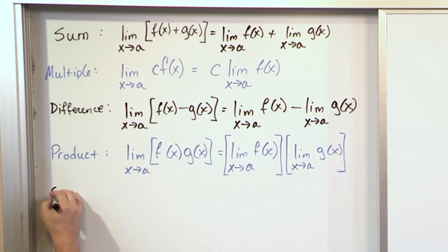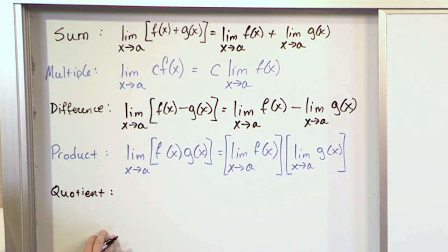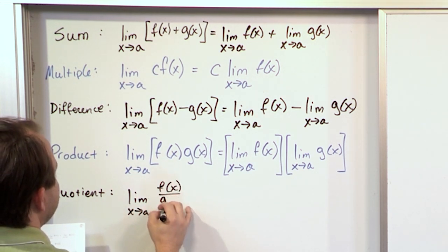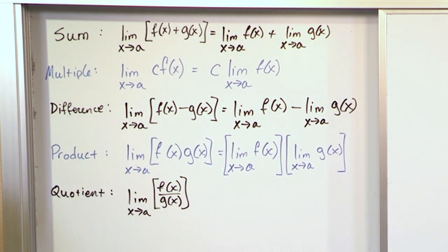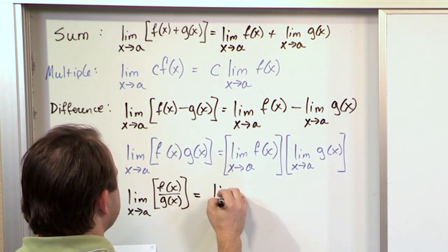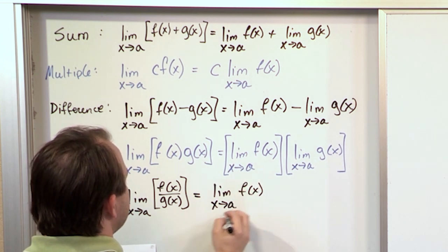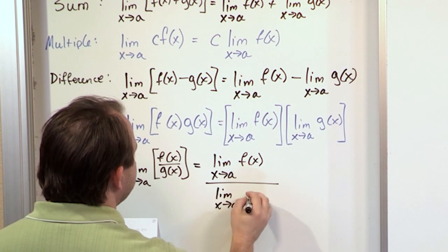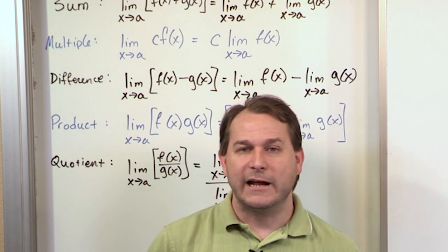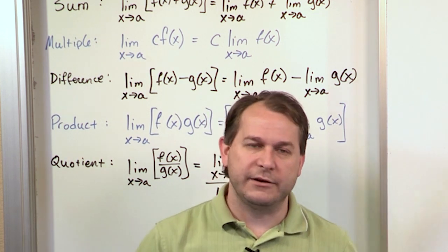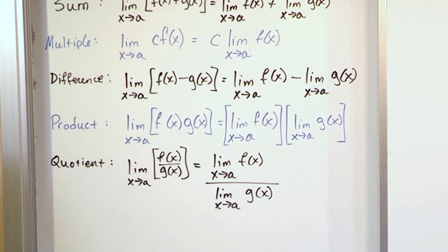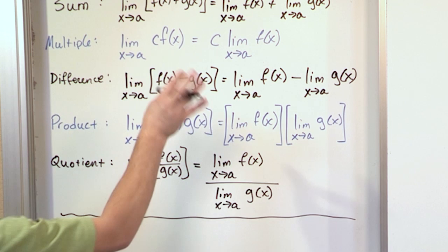And then the last one is called the quotient rule. If you have the limit as x approaches a of f of x divided by g of x — a function on top and a function on bottom — then what you basically do is you say the limit as x approaches a of f of x divided by the limit as x approaches a of g of x. Believe it or not, you've used that before too, because we've done lots of problems where you plug in the value on top and plug it into the bottom. Plugging it into the top and bottom is finding the limit of the top and finding the limit of the bottom. These are what I call the core limit laws.